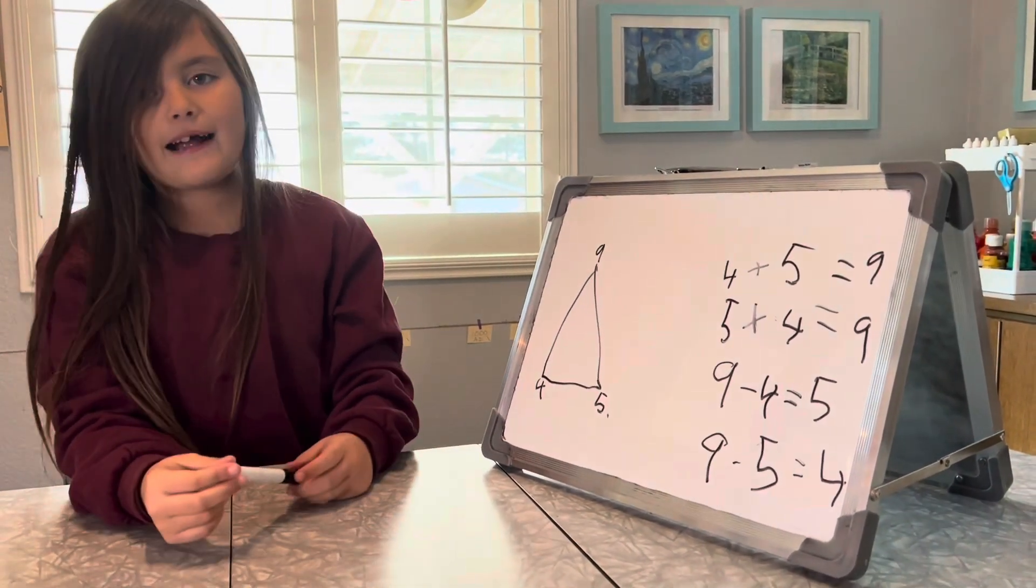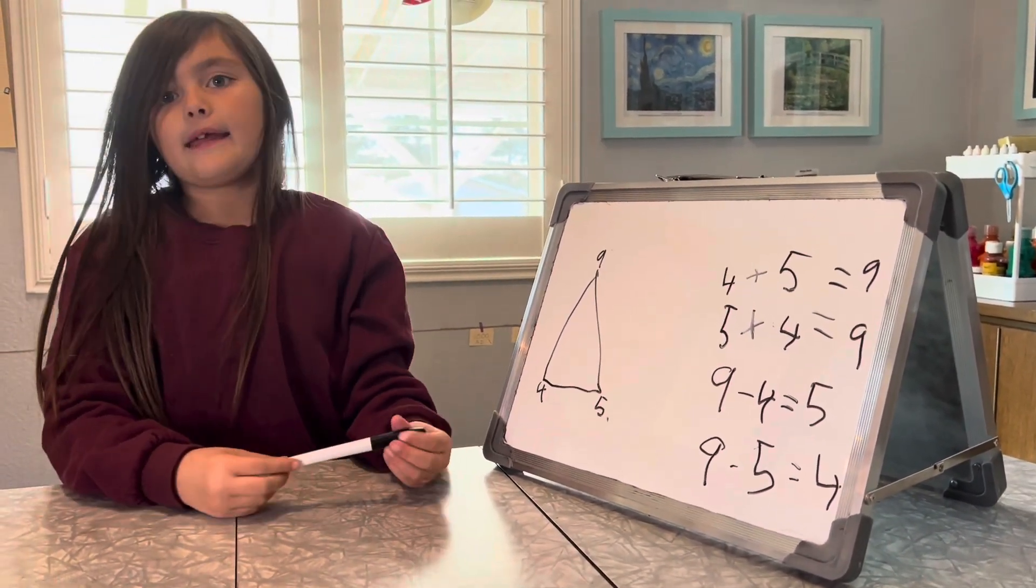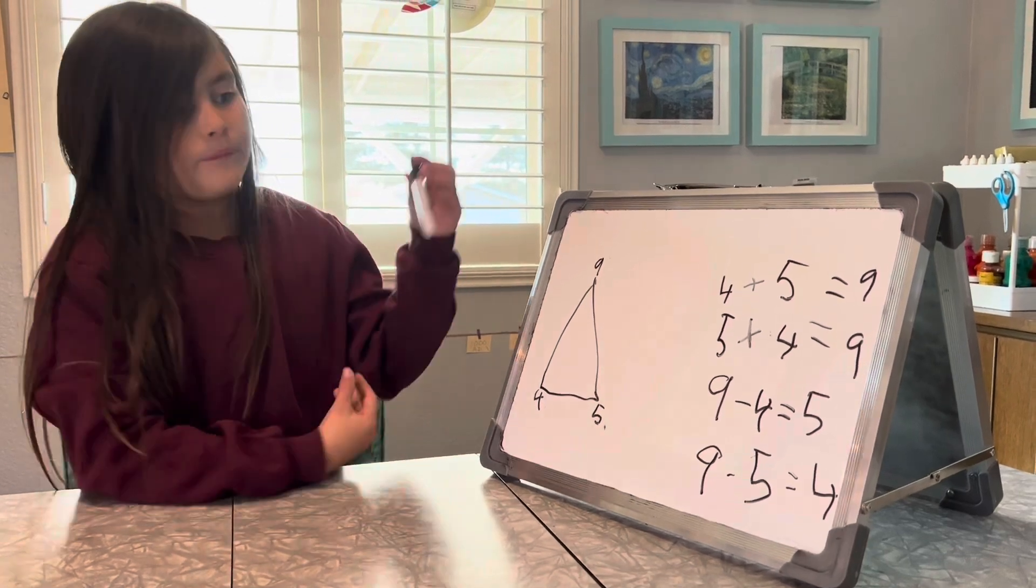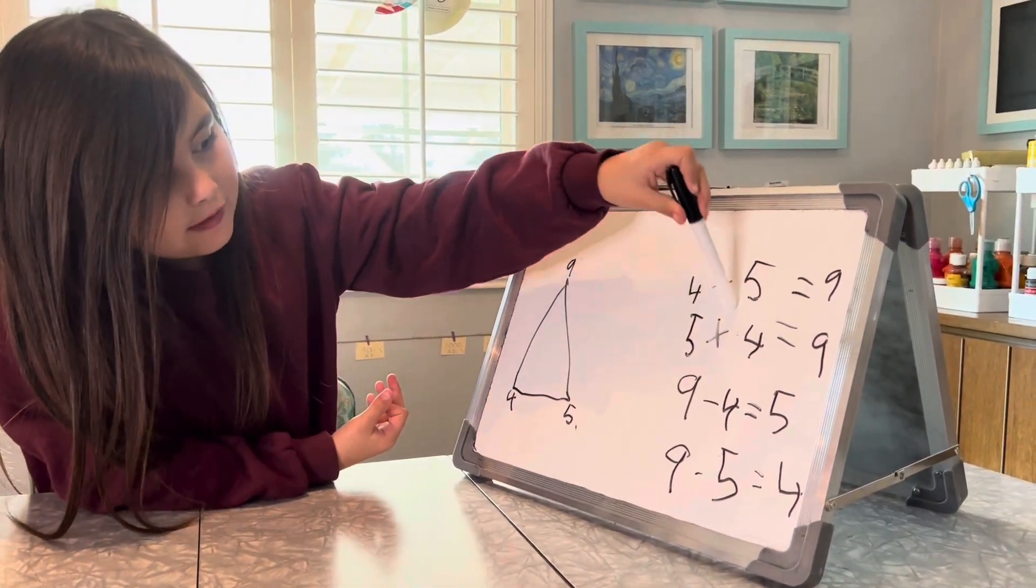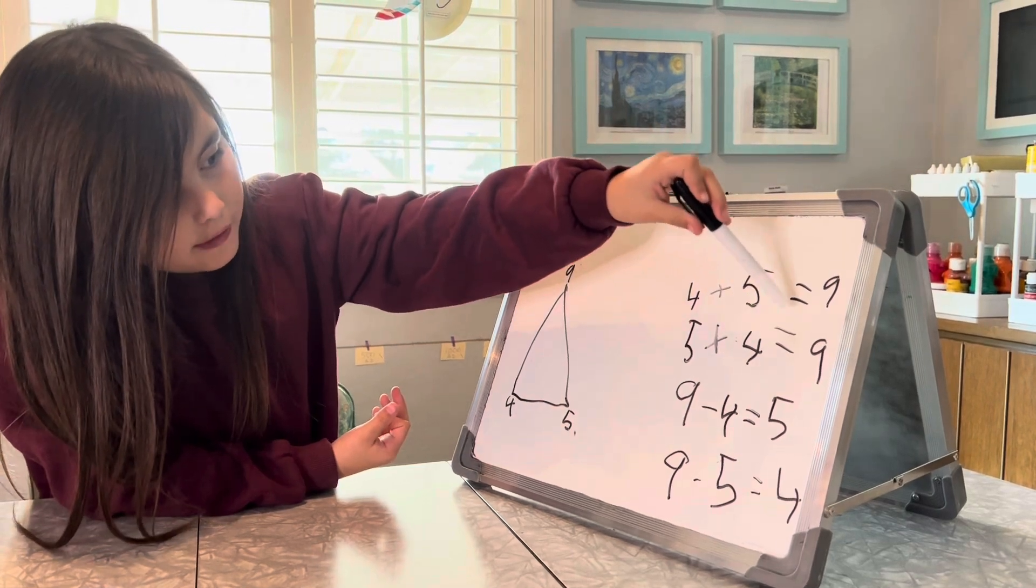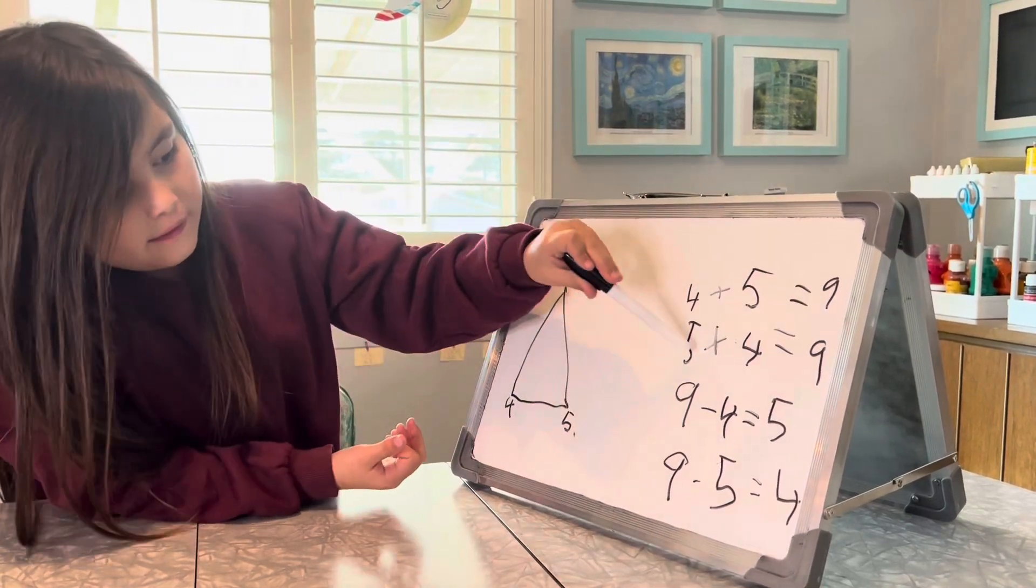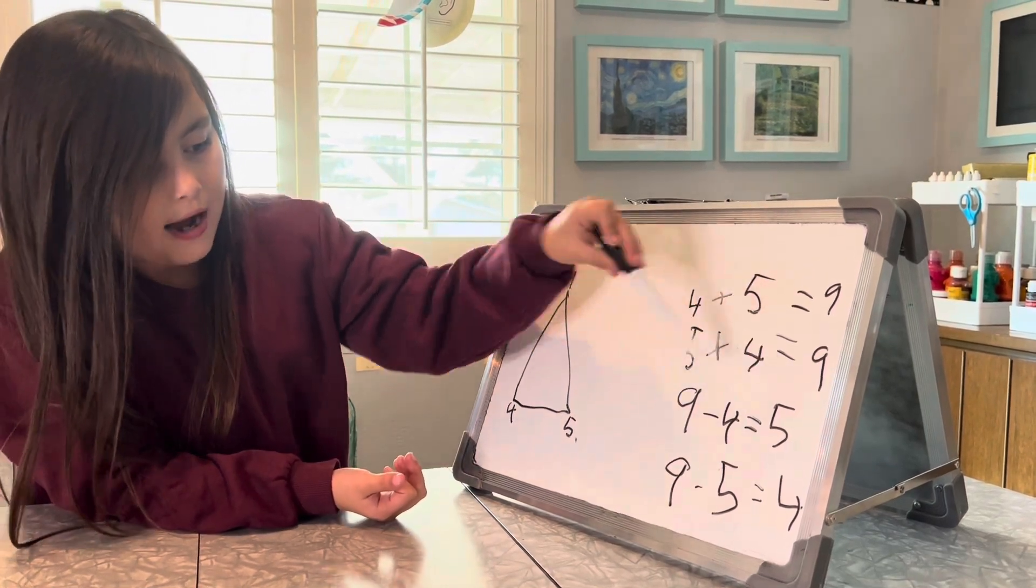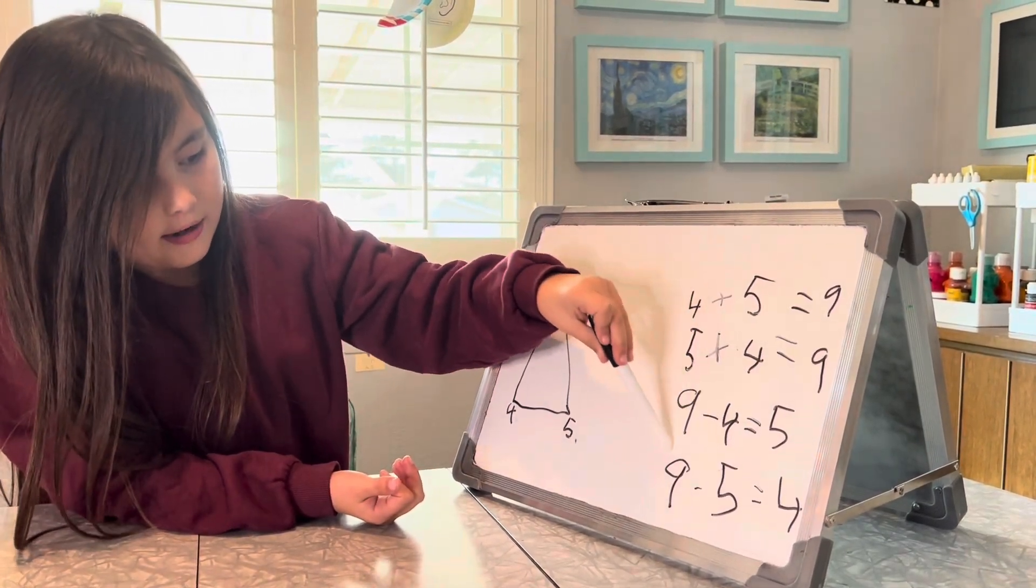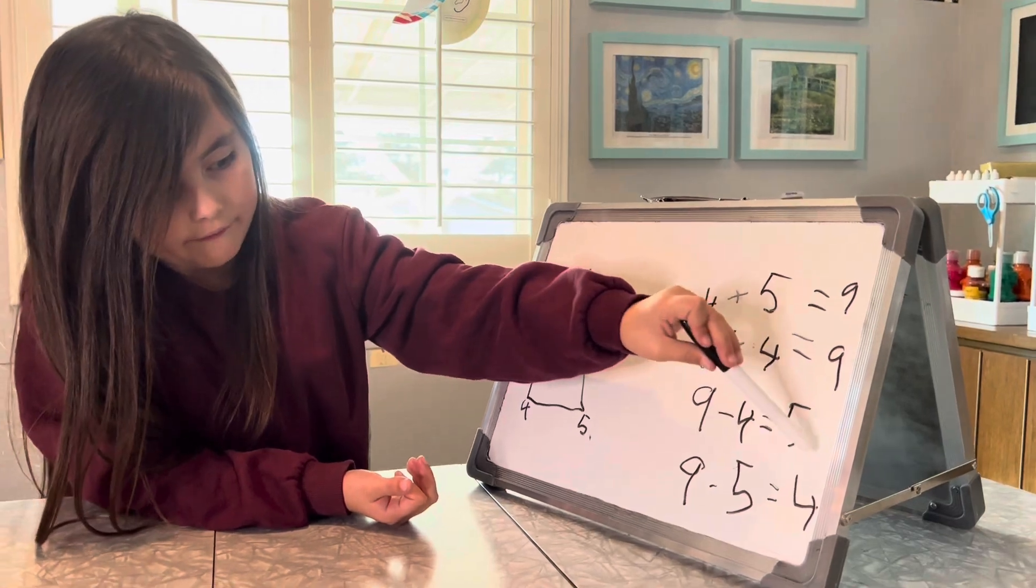These are all the fact families. Let's say them all together now. Four plus five equals nine. Five plus four equals nine. Nine take away four equals five. Nine take away five equals four.